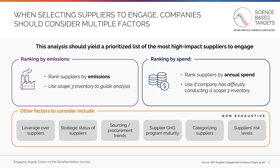Once you've decided to pursue a supplier engagement strategy, you must first identify which suppliers to include in your target, focusing on the highest impact suppliers. As a starting point, you must rank your suppliers. There are two ways to do so: either by emissions or by spend. Ranking by emissions is preferred, but can prove difficult if you do not have visibility into supplier emissions data. If ranking by emissions is difficult or prohibitive, you should rank by spend. Once you have a ranked list, you should consider additional qualitative factors which can influence the suppliers you choose to engage. For example, if you have strong leverage over a supplier and a strategic long-term partnership in place, they could be a good candidate for engagement. Conversely, if you are likely to drop a supplier in the coming years, they may not be included. Determine which qualitative factors are most relevant to your business when developing your supplier list.